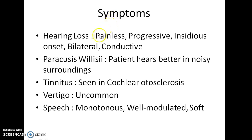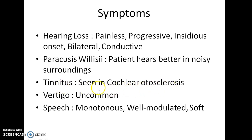What are the symptoms of Otosclerosis? There will be hearing loss — painless, progressive, insidious in onset, bilateral, and mostly of conductive type. A particular symptom called Paracusis will be seen, where the patient hears better in noisy surroundings. Tinnitus will be seen in Cochlear Otosclerosis. Vertigo is an uncommon symptom. The speech of Otosclerosis patients will be monotonous, well modulated and soft.